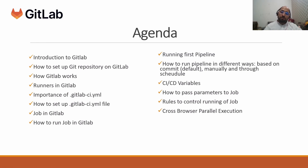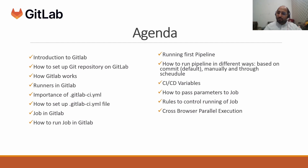We'll cover CI/CD variables and how to run a job or pipeline using parameters — a parameterized job or pipeline. At last we'll cover rules to control the running of jobs, and we'll cover how to utilize GitLab to execute the same test case across different browsers, that is cross-browser parallel execution.